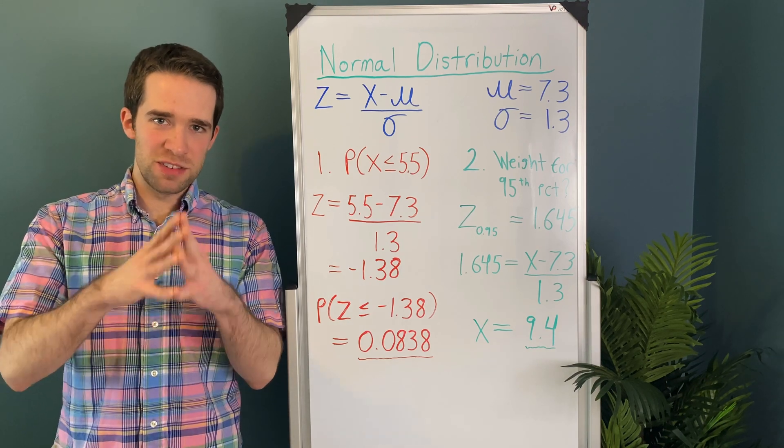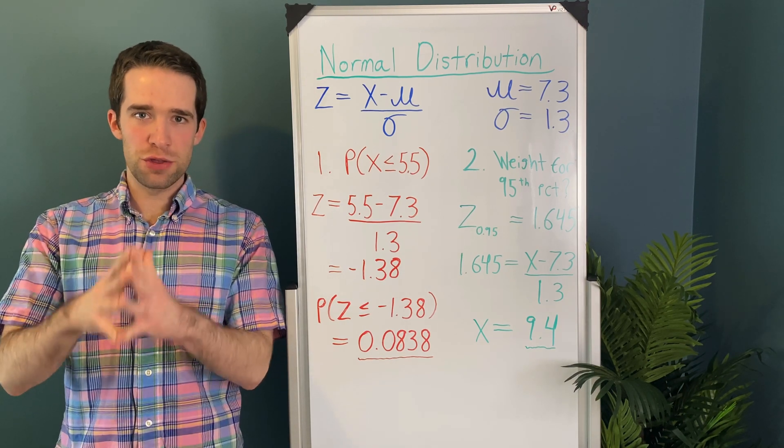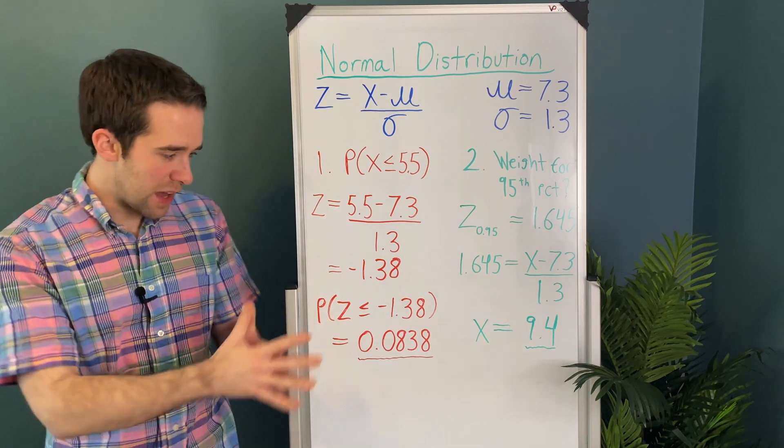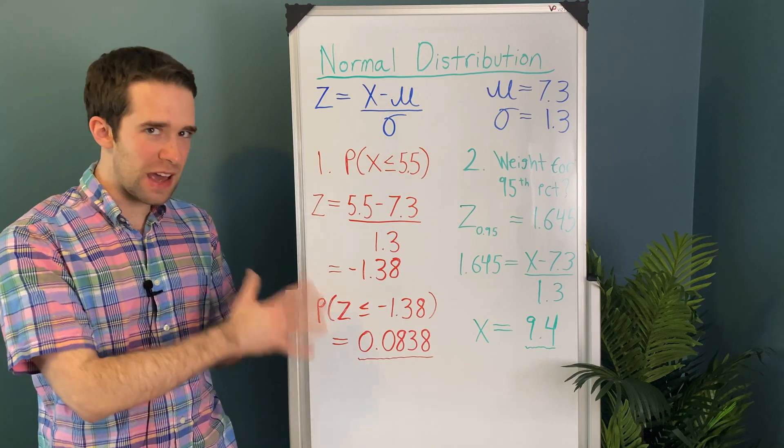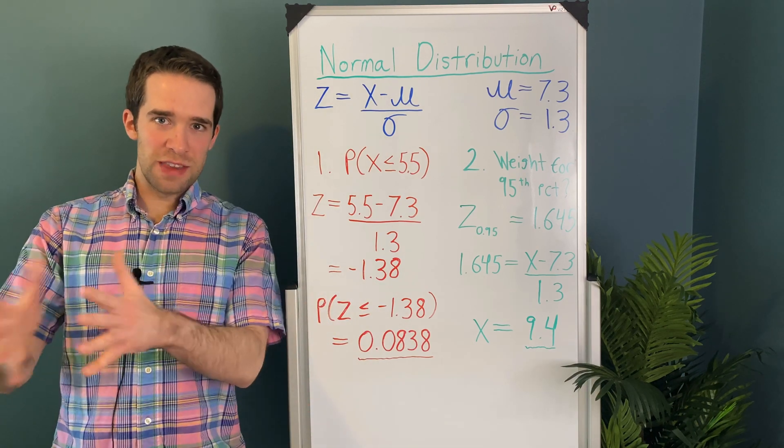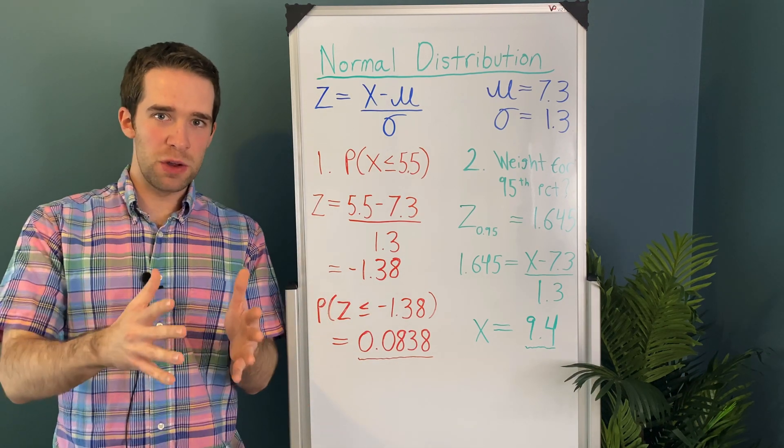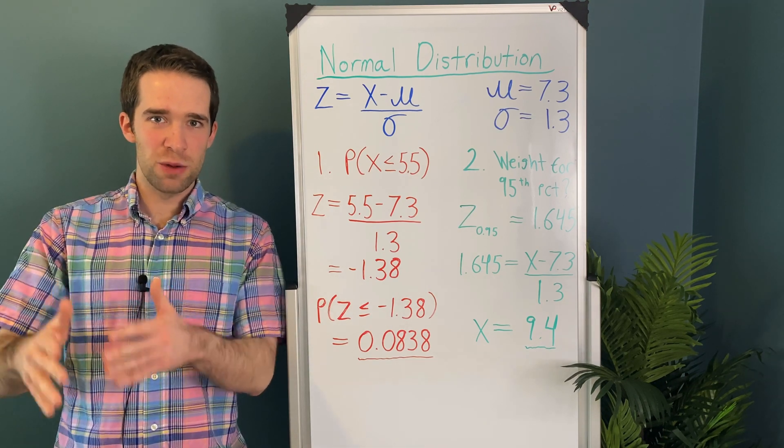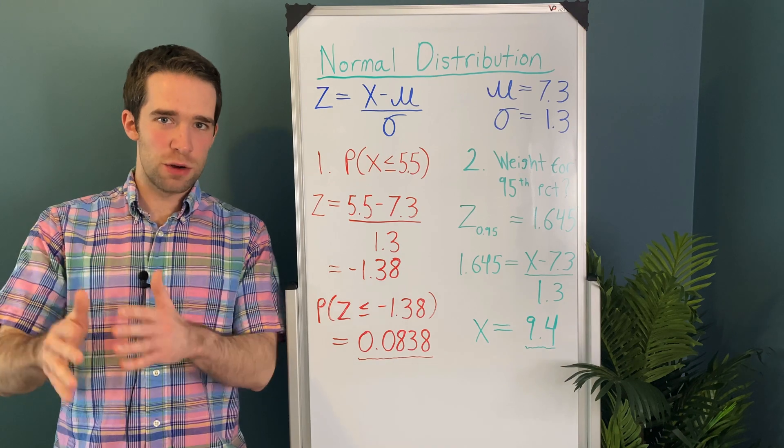Now we have to go to our normal probability table. We're going to look up z equals negative 1.38. And we find that the area to the left of that point is .0838. Well, we're done. That is our answer. The probability that a randomly selected baby weighs less than 5.5 pounds at birth is .0838. That is 8.38%.